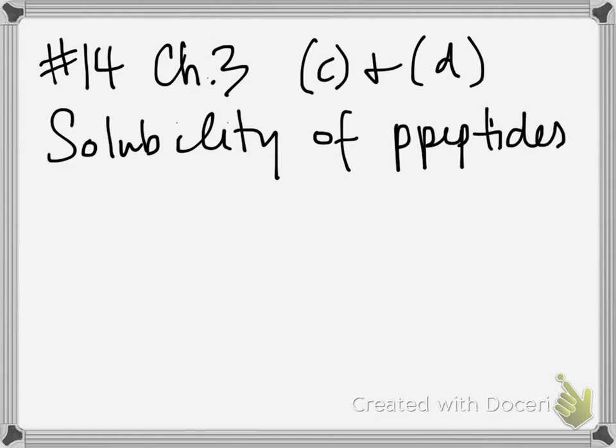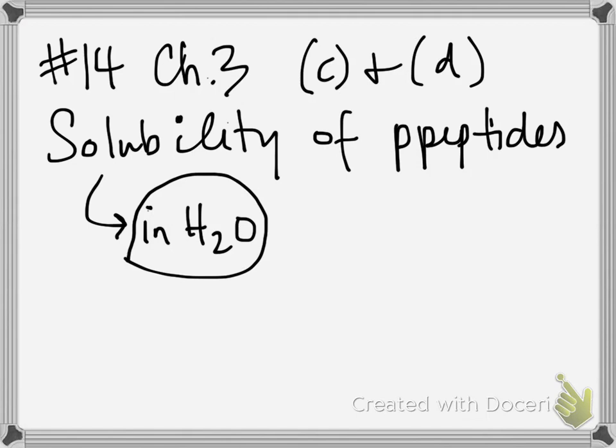In the setup of the problem, they're reminding you that one method for separating polypeptides makes use of their different solubilities. Solubility in water will depend on the relative polarity of the R-groups in the peptide, and specifically the ionized groups. So to be soluble in water, you've got to be able to interact with water.